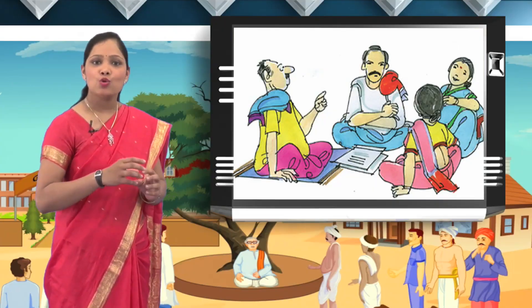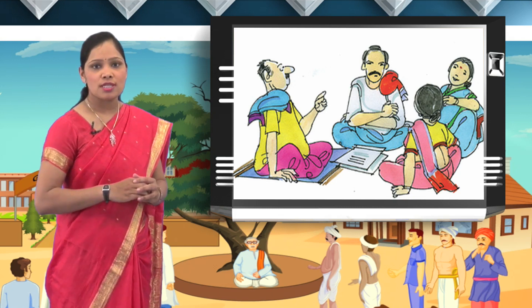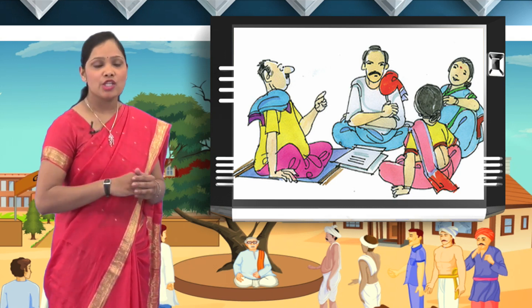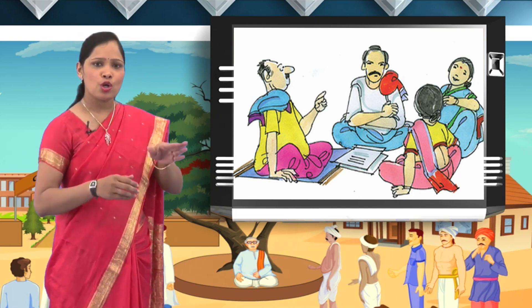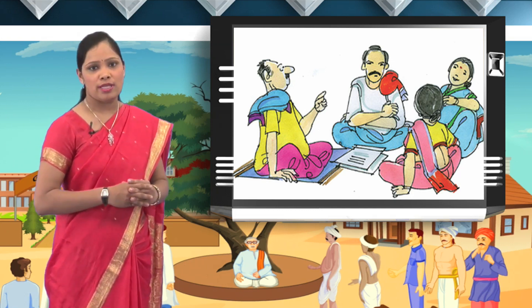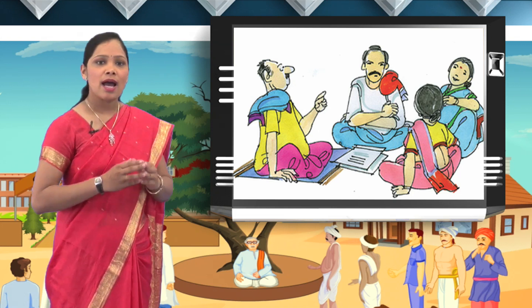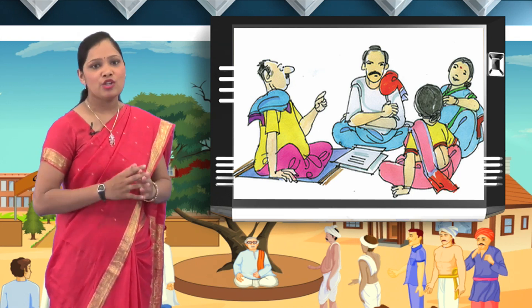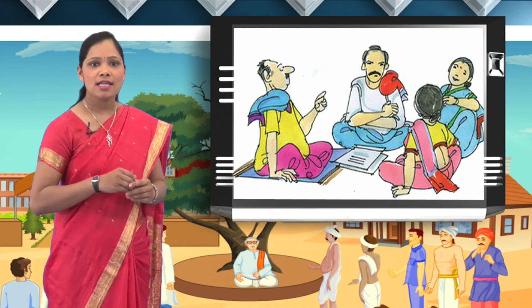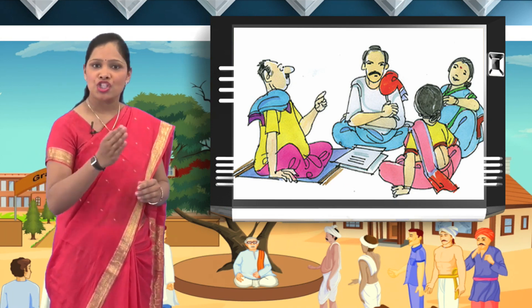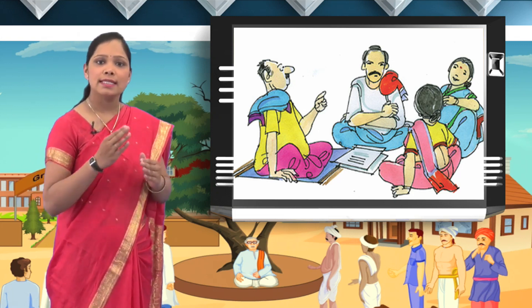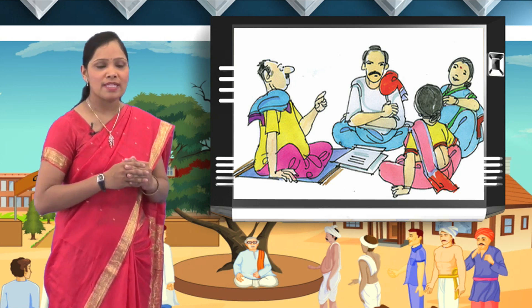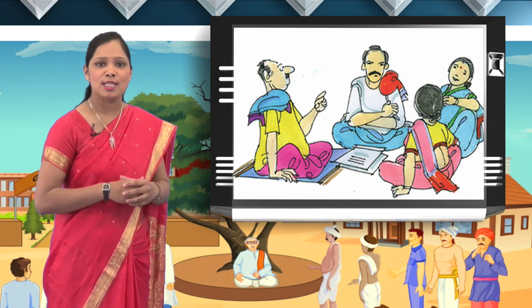Gram sabha includes all adult citizen voters above 18 years of age of the village. It has the power to support or topple the gram panchayat body. The gram sabha has a say in the decisions taken by the gram panchayat and can ask the gram panchayat to change its decision whenever they feel necessary. Gram sabhas also supervise the works being done under the Mahatma Gandhi Rural Employment Guarantee Act and other schemes.